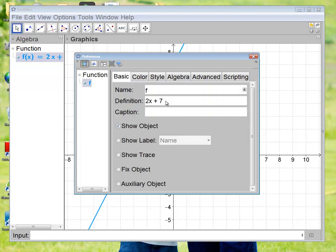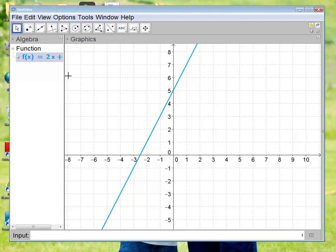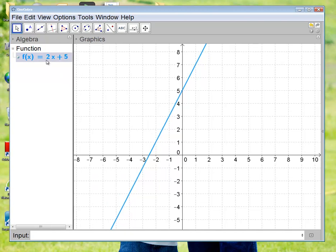Or you can come here to basic and change, so suppose I didn't like the 7, change it to 5. It's all good, now it's changed that equation. If you notice under here under the algebra window, we're looking at the fact that f of x is blue, and that the equation is 2x plus 5 graphed right here.